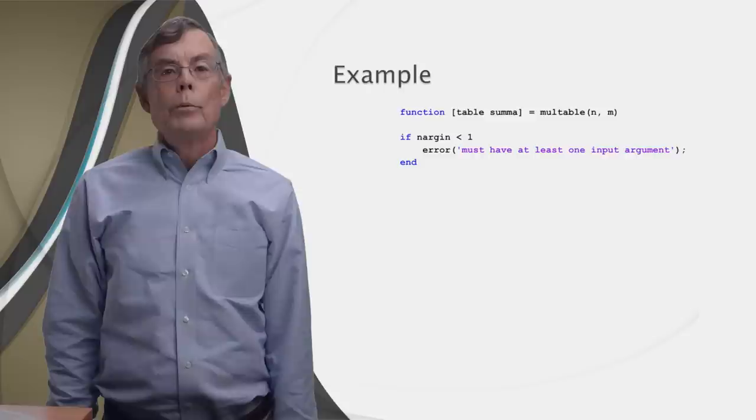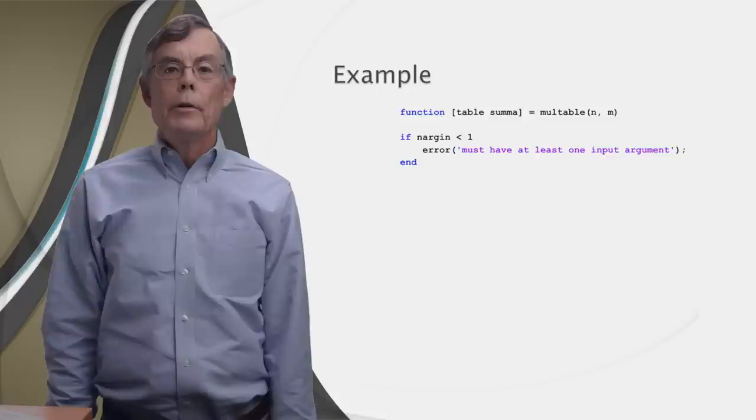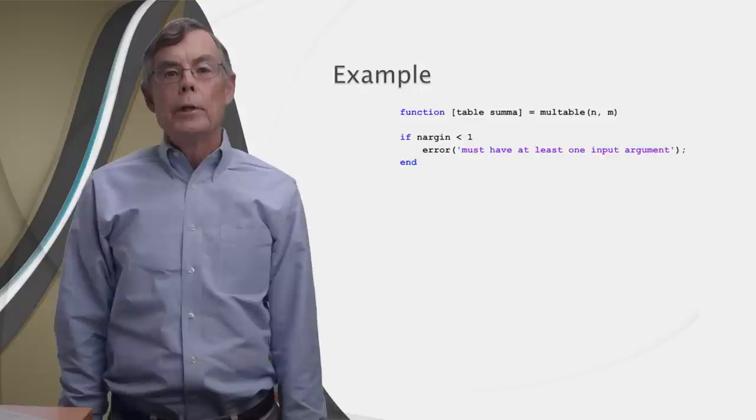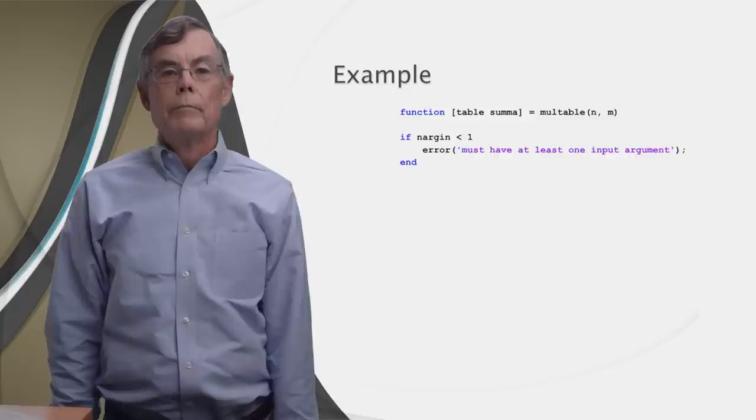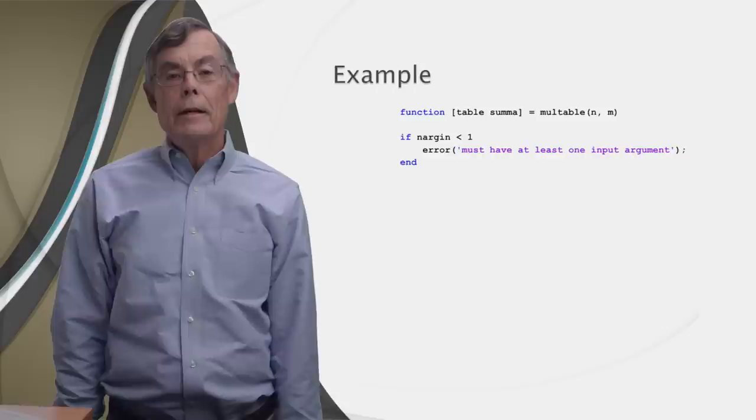Well, we do it with the if statement. Let's make our mult table function robust. First, we check whether the function was called with at least one input. If nrgin is smaller than one, then no input argument was provided. In that case, we call the built-in error function. It prints out the message we give it in red, and then terminates the function. That's how easy it is. And we get to print in red, and that's the only way to do that.